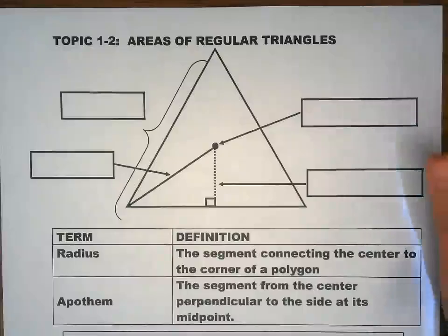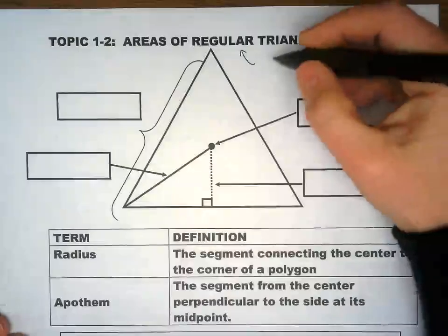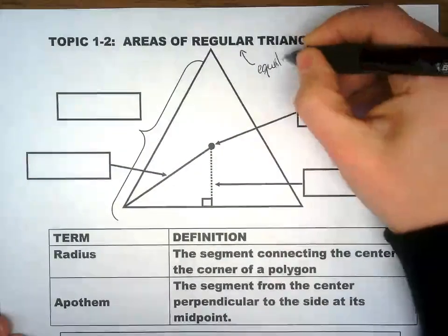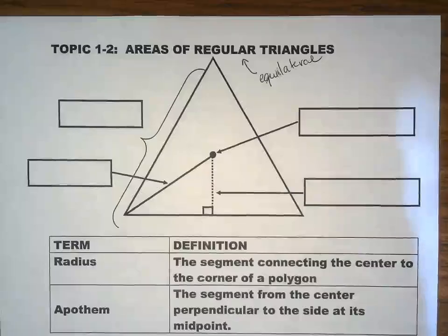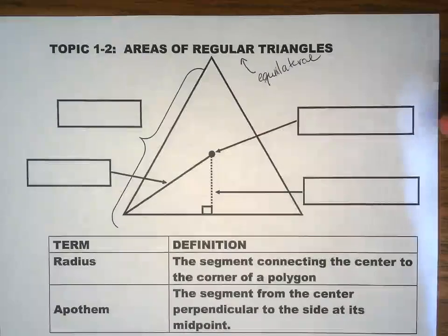So we're finding areas of regular triangles. We call a regular triangle when all three sides are the same, or when it's equilateral. For regular polygons, that means all sides of the polygon are congruent.